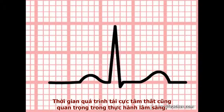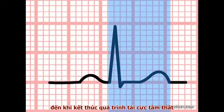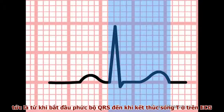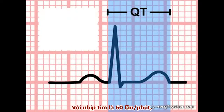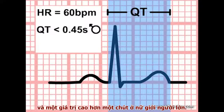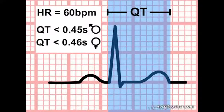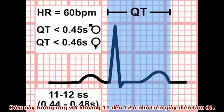The duration of ventricular depolarization is also important in clinical practice. The time between the onset of ventricular depolarization and the end of ventricular repolarization — that is, the beginning of the QRS complex and the end of the T wave on the ECG — is termed the QT interval. When the heart rate is 60 beats per minute, the QT interval should be less than 0.45 seconds in an adult male, with a slightly higher upper limit for adult females. These upper limits lie between 11 and 12 small squares on the ECG paper.